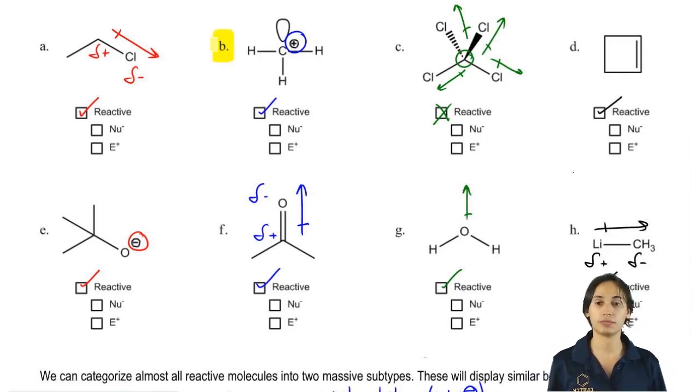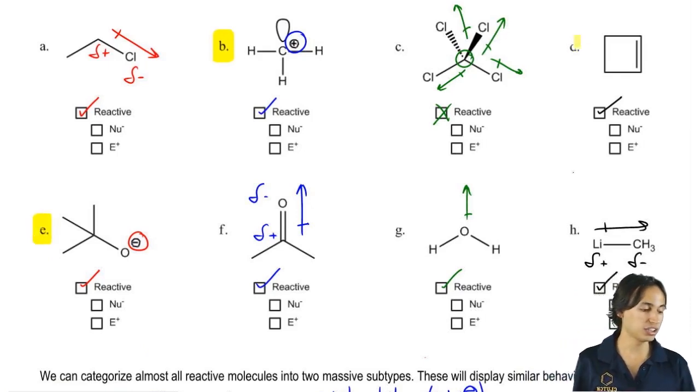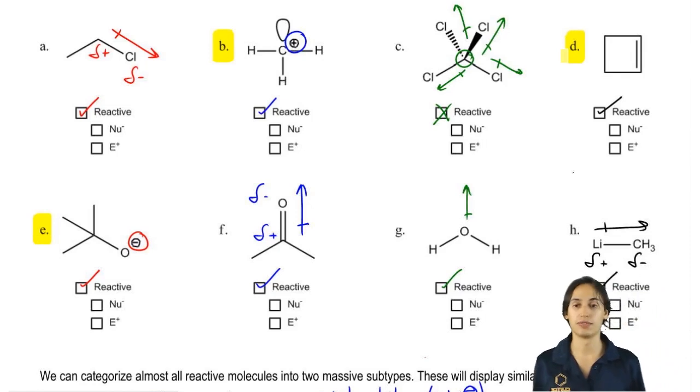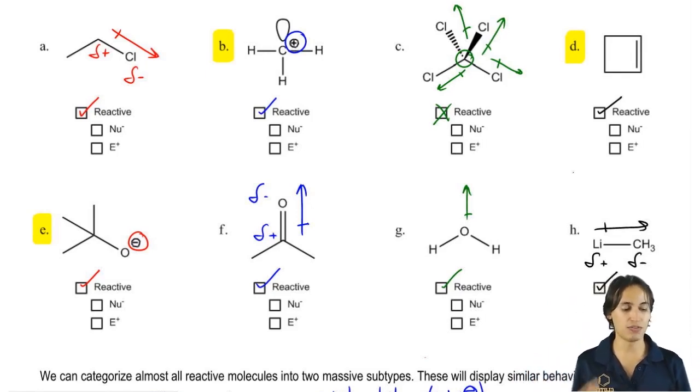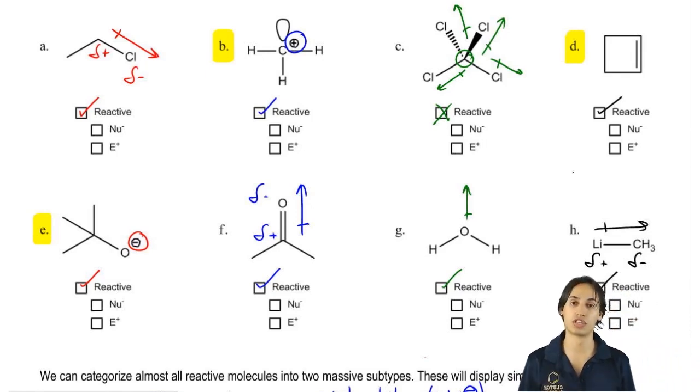So let me go ahead and tell you guys which ones are the easy ones to identify. B is easy to identify. E is easy to identify. And actually D is easy to identify. So for these, already just without knowing the next rule I'm going to teach you, you should be able to tell me if these are going to react as nucleophiles or electrophiles.